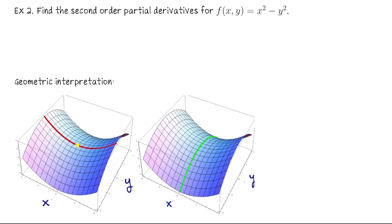Let's compute all of the second-order partial derivatives for f(x, y) = x² − y², and then we'll talk about what we've actually computed. Let me compute f sub xx first — the second derivative of f with respect to x. If I differentiate f once with respect to x, we get 2x. Do it twice and we're left with 2.